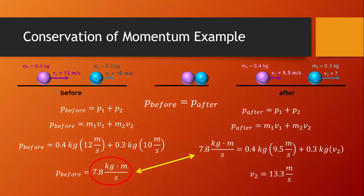If we look at the big picture, we can see that the momentum of each ball is different than it was before the collision. The purple ball lost some momentum, and the blue ball gained some momentum. The law of conservation of momentum tells us that the total momentum of the system has to be the same.